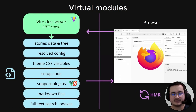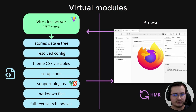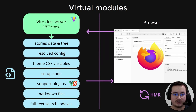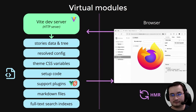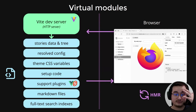In fact, we use this virtual module system quite a lot in Histoire. We have many different virtual modules being loaded in the browser — for example, the resolved configuration, CSS variables to change the color of the UI, support plugins for compatibility with different frameworks, markdown files, and search indexes to power the full-text search feature of the UI. All of those can integrate with the HMR system of Vite.